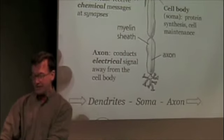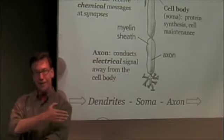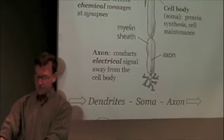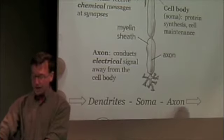So what I want you to remember here is that there's a sort of directionality of information. Information flow in the form of current is going to go from dendrite through soma through axon.